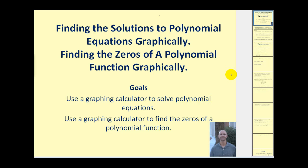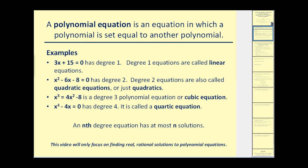Welcome to a lesson on finding the solutions to polynomial equations and the zeros of polynomial functions graphically. A polynomial equation is an equation in which a polynomial is set equal to another polynomial — the key word being 'set equal to.' An equation has an equal sign where an expression would not.